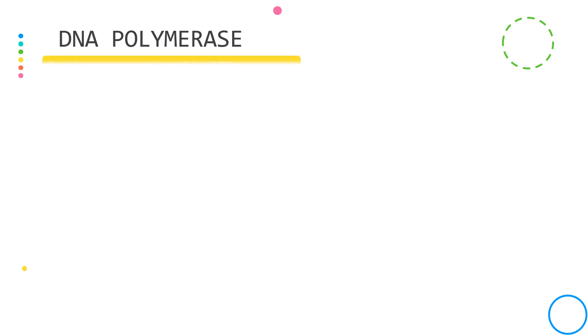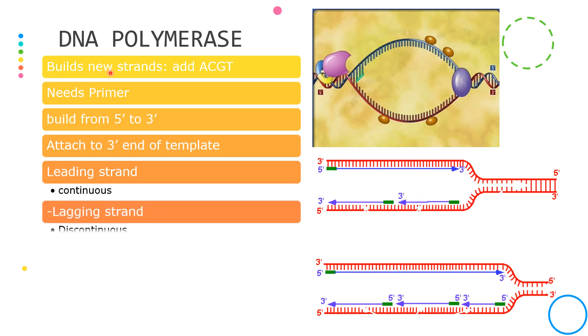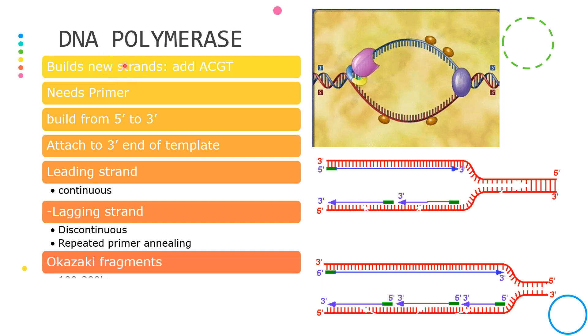The third enzyme in the DNA replication is the DNA polymerase. This is known as the builder since it builds or it replicates DNA molecules to build new strands of DNA. It performs this by adding